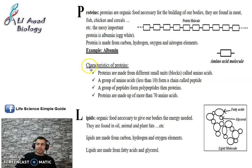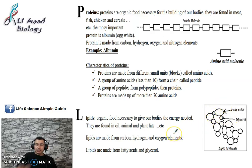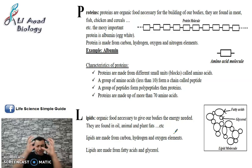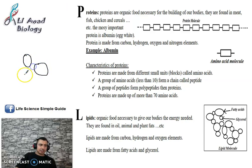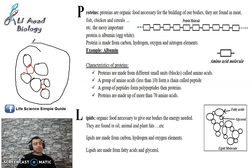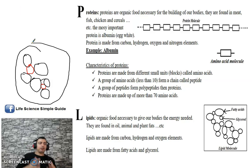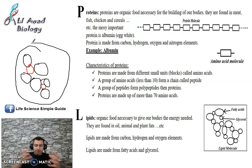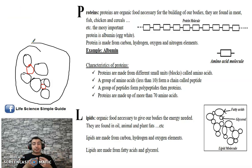Lipids are made of fatty acids and glycerol. When fatty acids and glycerol aggregate together, they form a lipid molecule. For example, if I take three fatty acids and one glycerol, this whole molecule is called a lipid. A lipid is a molecule made up of two substances: fatty acids and glycerol. If you break down lipids, they convert into fatty acids and glycerol.